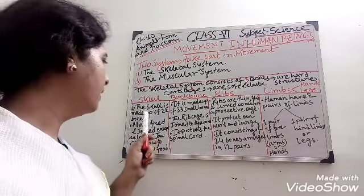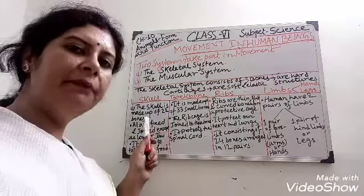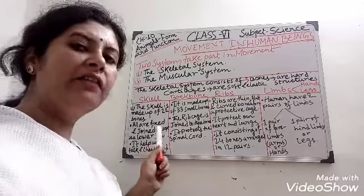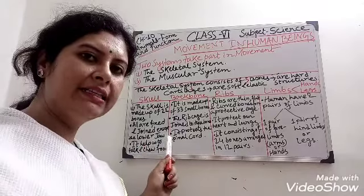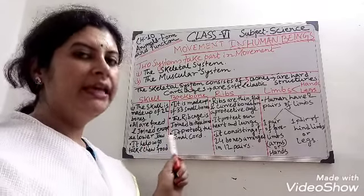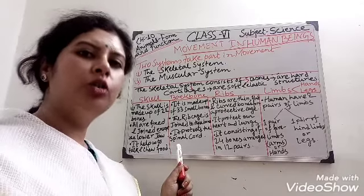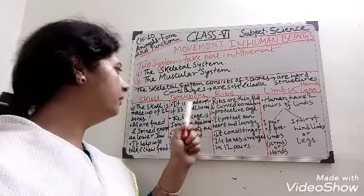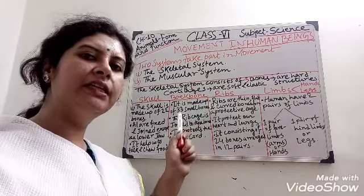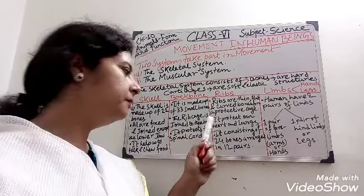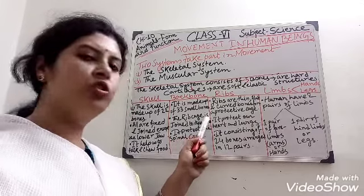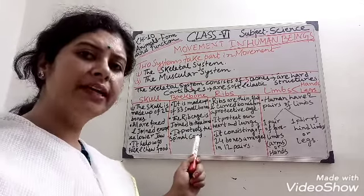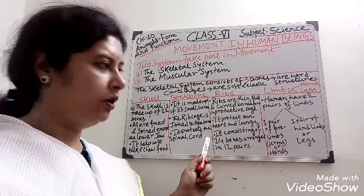First, the skull. The skull is made up of 22 bones. All are fixed and joined except our lower jaw, which helps us to talk and chew food. Next, the backbone. It is made up of 33 small bones. The rib cage is joined to this backbone, and it protects the spinal cord.